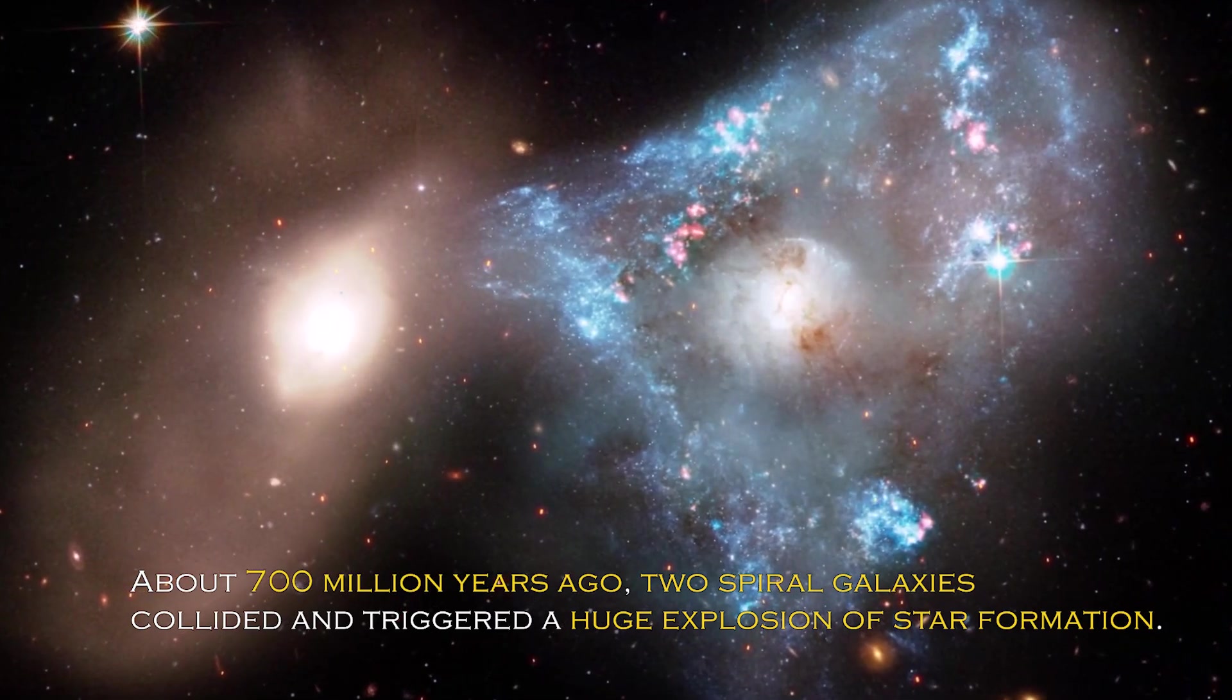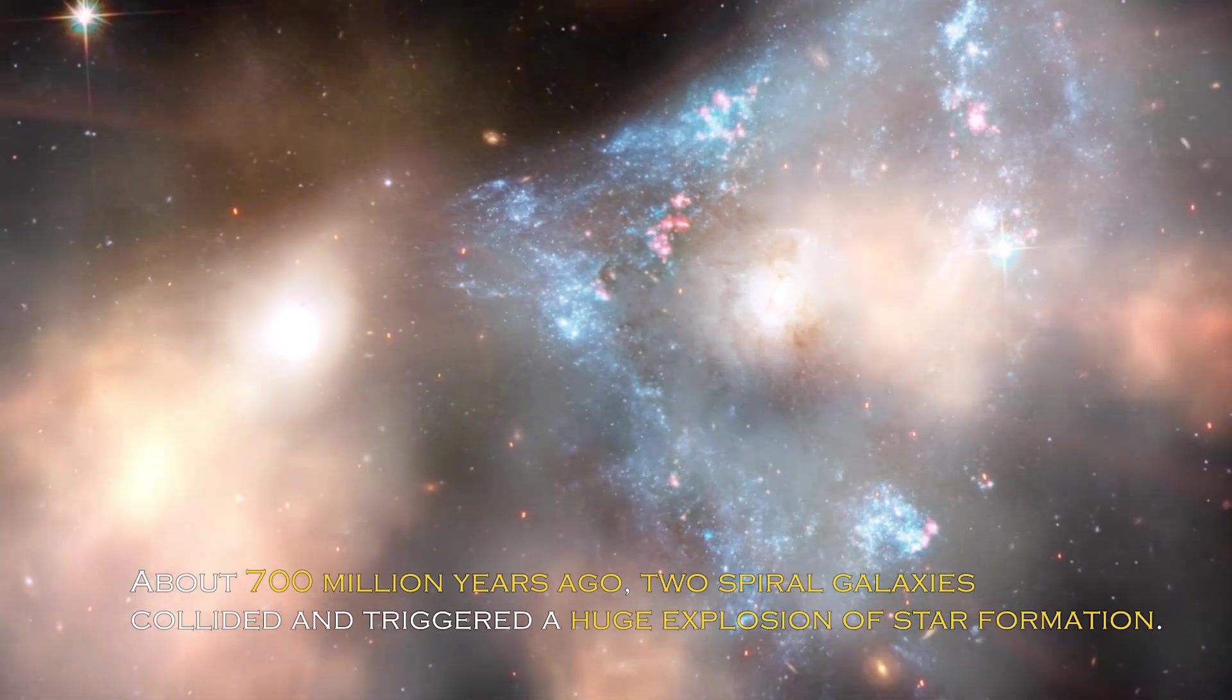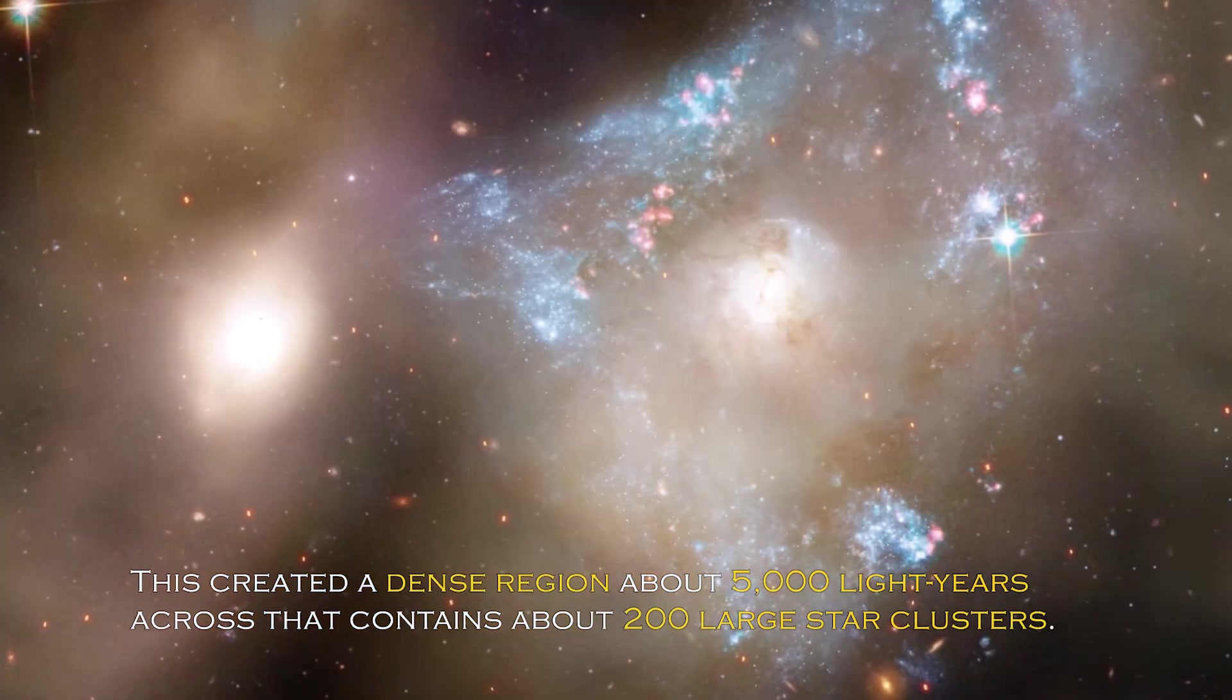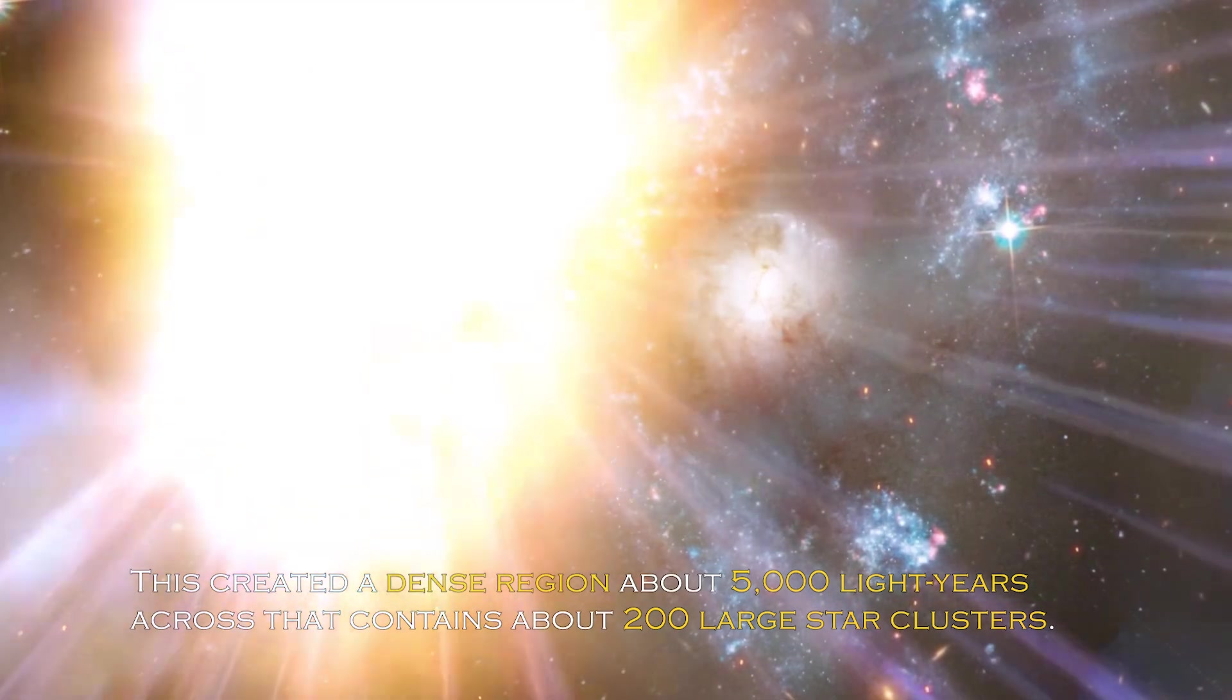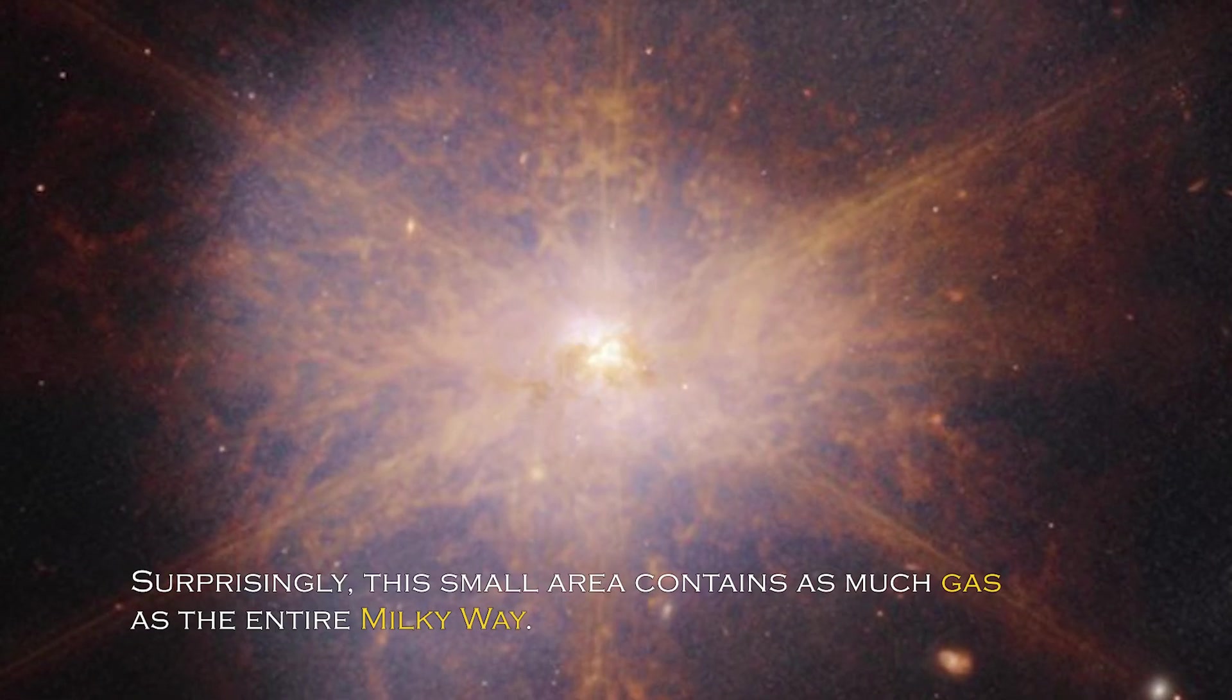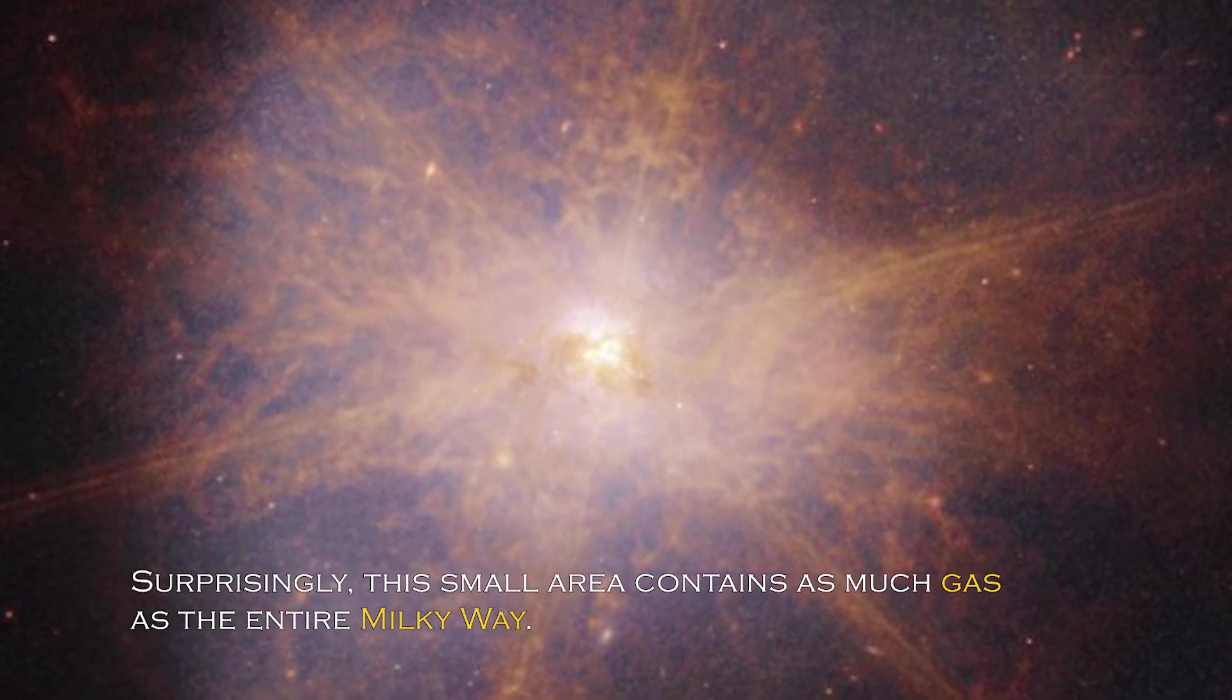About 700 million years ago, two spiral galaxies collided and triggered a huge explosion of star formation. This created a dense region about 5,000 light-years across that contains about 200 large star clusters. Surprisingly, this small area contains as much gas as the entire Milky Way.